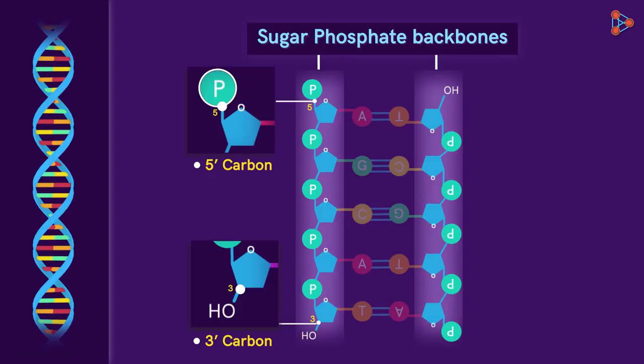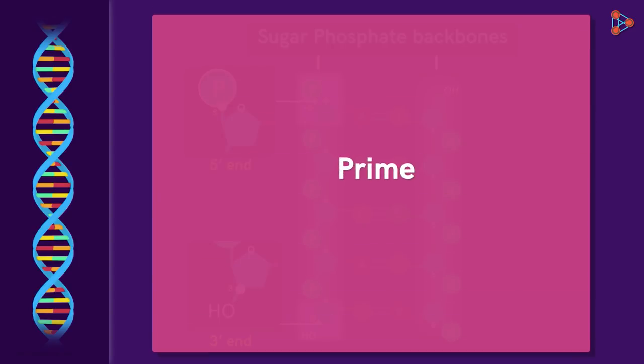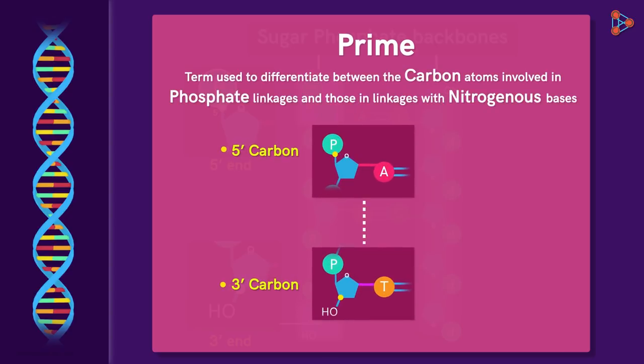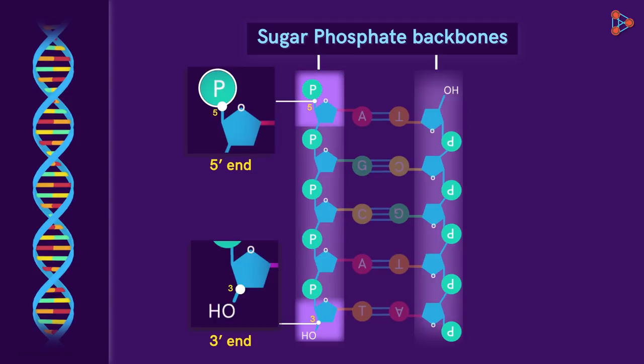To simplify this, in a DNA strand, this end is referred to as the 5' end, while this is the 3' end. But why is the term prime used here? It's simply to distinguish these carbon atoms from the ones which are involved in linkages with the nitrogenous bases. Getting back to our explanation, this is the 5' end, while this is the 3' end. The 5' end has the phosphate group attached to it, while the 3' end has a free hydroxyl group.